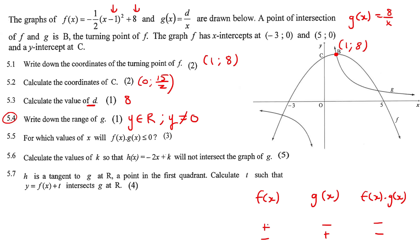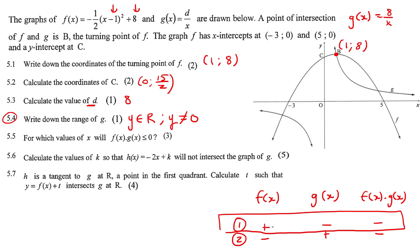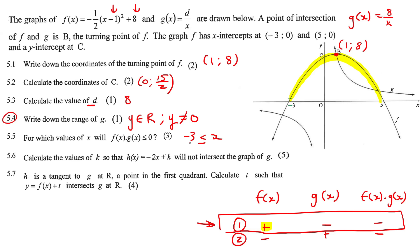Situation one: we want f(x) positive (above the x-axis) and g(x) negative in the same interval. F(x) is positive over that region. G(x) is negative in the area from x = −3 up to the asymptote at x = 0. So for situation one: −3 ≤ x < 0, excluding zero because you're never allowed to include an asymptote.